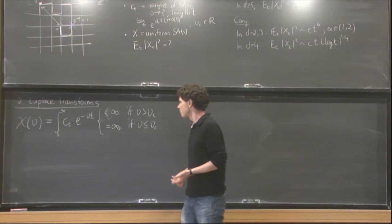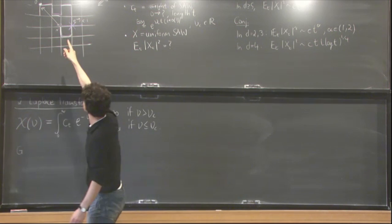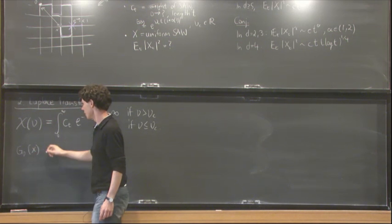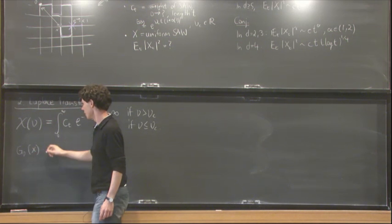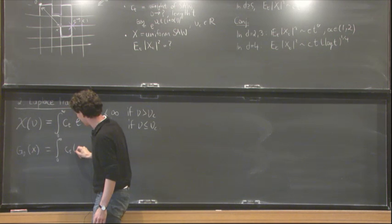What is nu? Nu is a real number. Not explicit. In general, it's a non-explicit number. Nu_c is just a real number, positive.